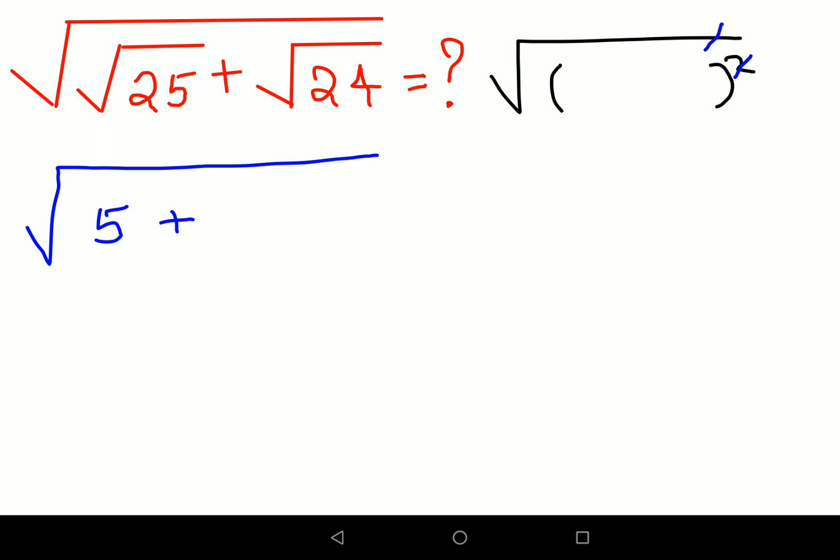Now see, we'll try to factorize root 24. When you factorize root 24, whenever you're trying to factorize something under a square root, you will try to write it in terms of a perfect square multiplied by some value. So here also, please understand, you should do 4 into 6.